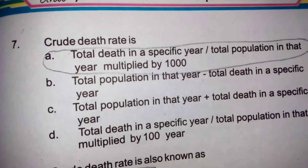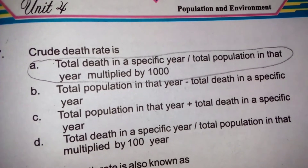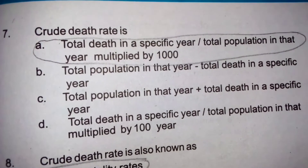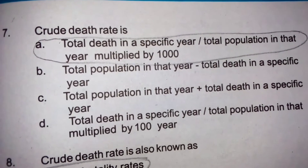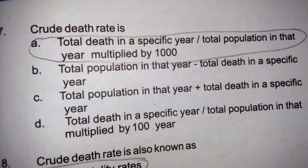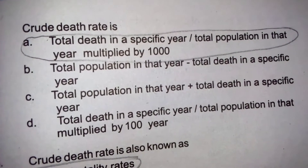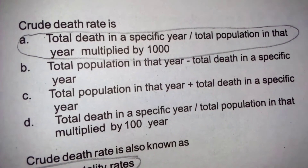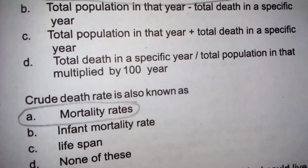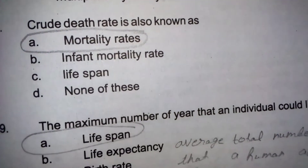Crude death rate کیا ہے؟ Total deaths in a specific year divided by total population in that year, multiplied by 1000۔ Crude death rate is also known as mortality rate.